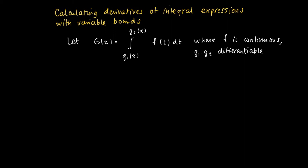And we want to calculate, that's our task, calculate g prime of x for any x such that g1 x and g2 x are in a, b. Well,